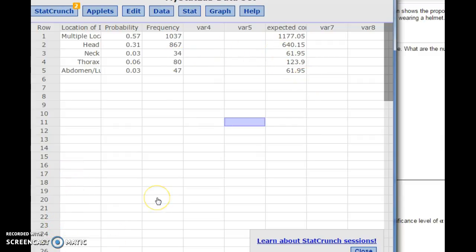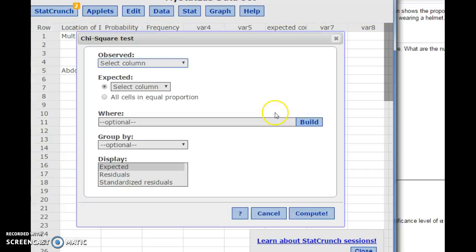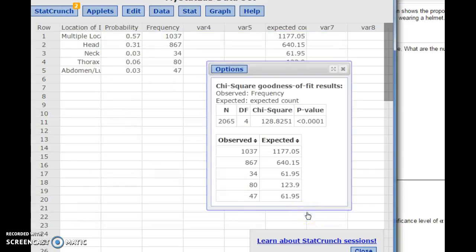Now to calculate the test statistic and see if we need to reject the null hypothesis, we can go to stat, goodness of fit, and chi-square test. Select your observed, the observations from your sample, what's the frequency, and what you expected is in our column expected count. So hit compute.